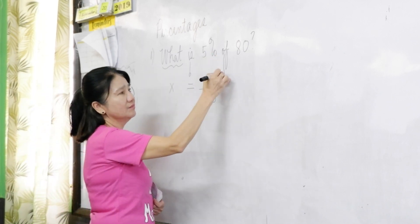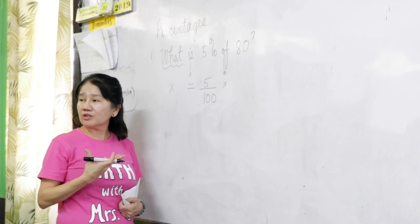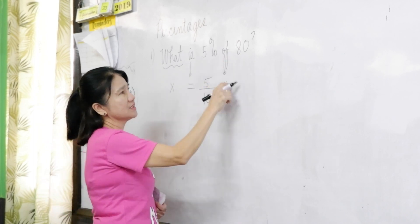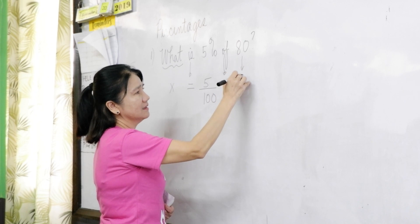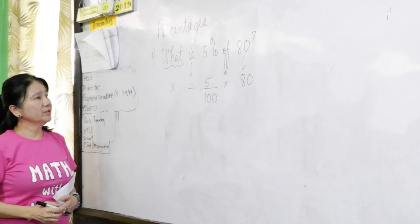Of - of refers to times, whenever you see the word of. In mathematics, it's times 80. There, is your equation. Now, what do we do here?